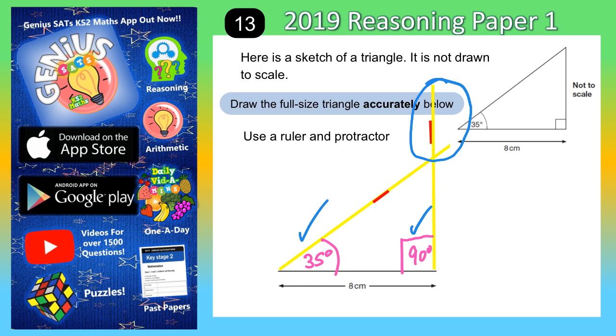We were never given any information anyway about how long this line was and how long this line was. They will automatically cross at the right point because we've got the angles correct. So that's how you get the mark on this question.